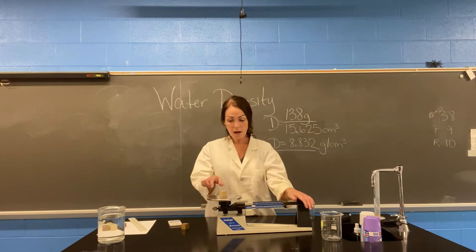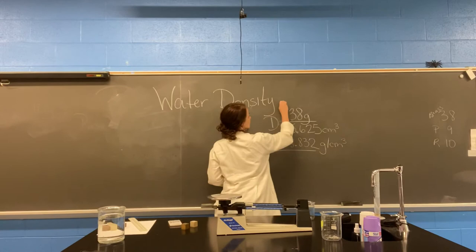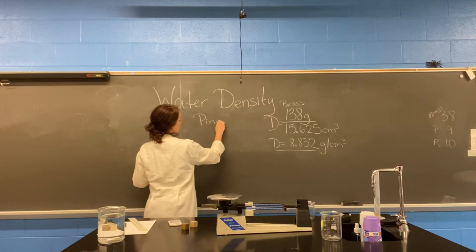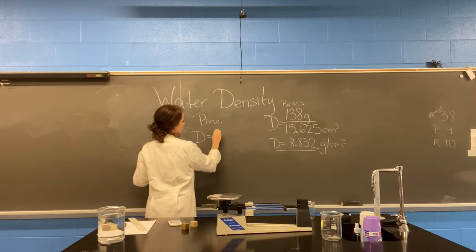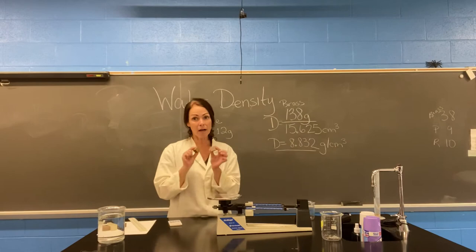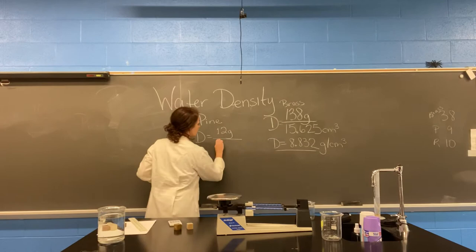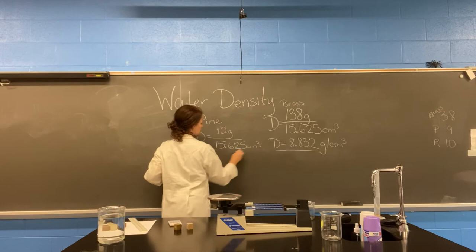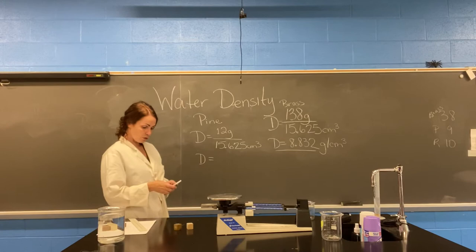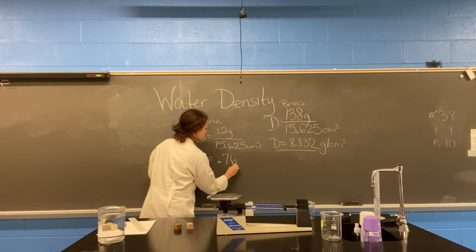The pine block has a mass of 12 grams. Because it's the exact same size as the brass cube, I'm not going to worry about finding the volume — it's going to be 15.625 cubic centimeters. So we divide 12 by 15.625 and find that our density is 0.768 grams per cubic centimeter.